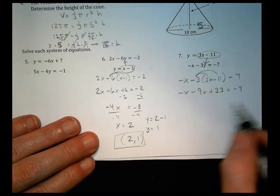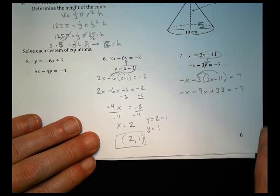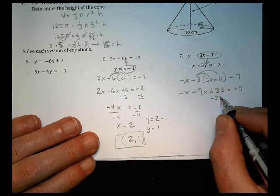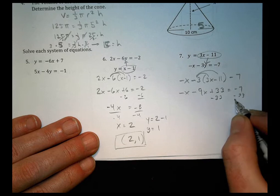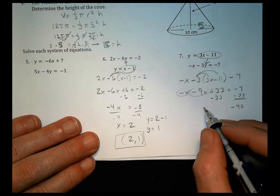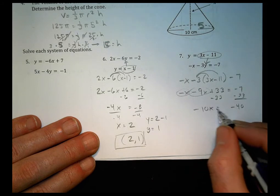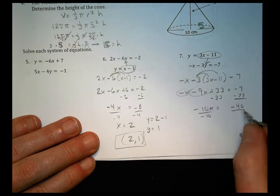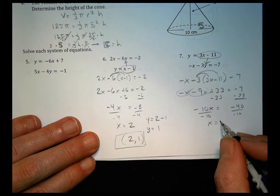What are we going to do from here? We're going to combine like terms and continue on. Negative 33, we're going to subtract 33, so we have a negative 40 over here. Negative x and negative 9x, we can make a negative 10x. Divide both sides by negative 10, and x equals 4.